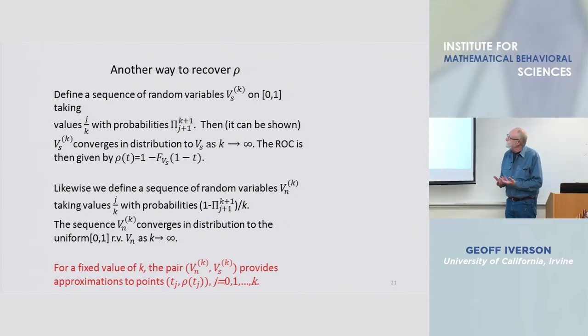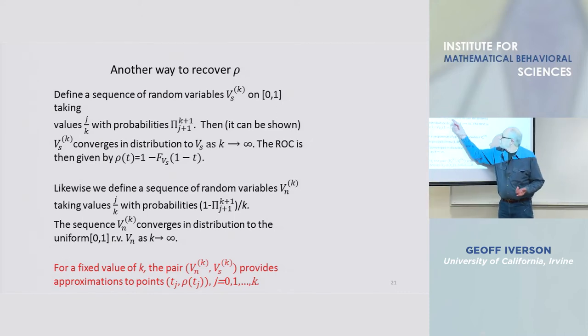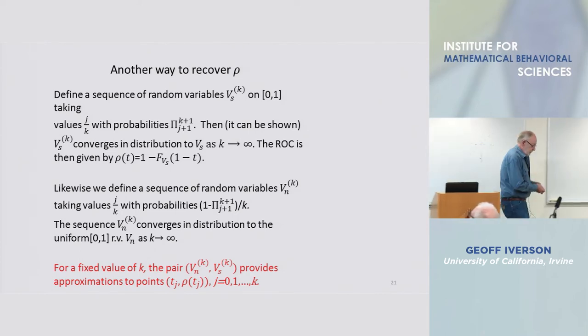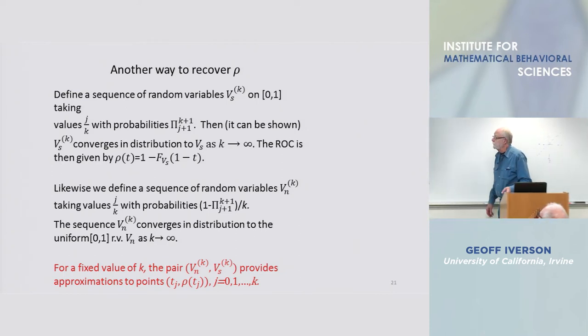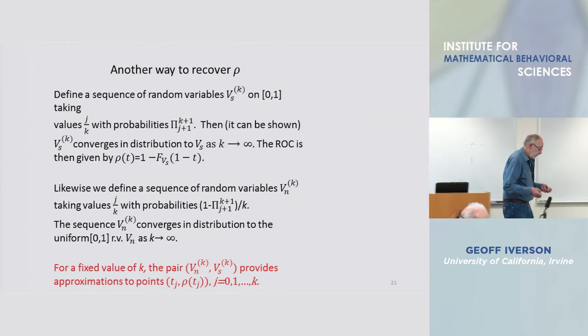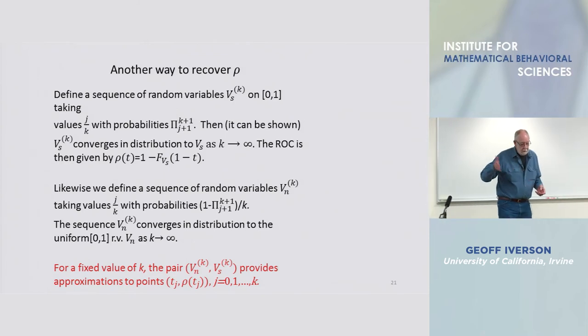What you do is to take the ranking probabilities and define a collection of random variables indexed by k, whose values are on zero one at the points one over k, two over k, through one.